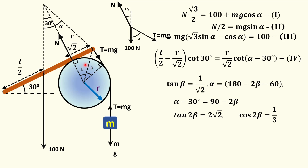Now let's look at another piece of geometry. Tan beta equals 1 over root 2. In this right-angle triangle, tan beta equals the height divided by the radius, which is (r over root 2) divided by r, giving 1 over root 2. Also, for alpha: try to derive it yourself. Alpha equals 180 minus 2 beta minus 60. We can see that the total angle in that region equals 2 beta, and with two 90-degree angles, the total internal angles sum to 360 degrees, so this total angle equals 180 minus 2 beta.